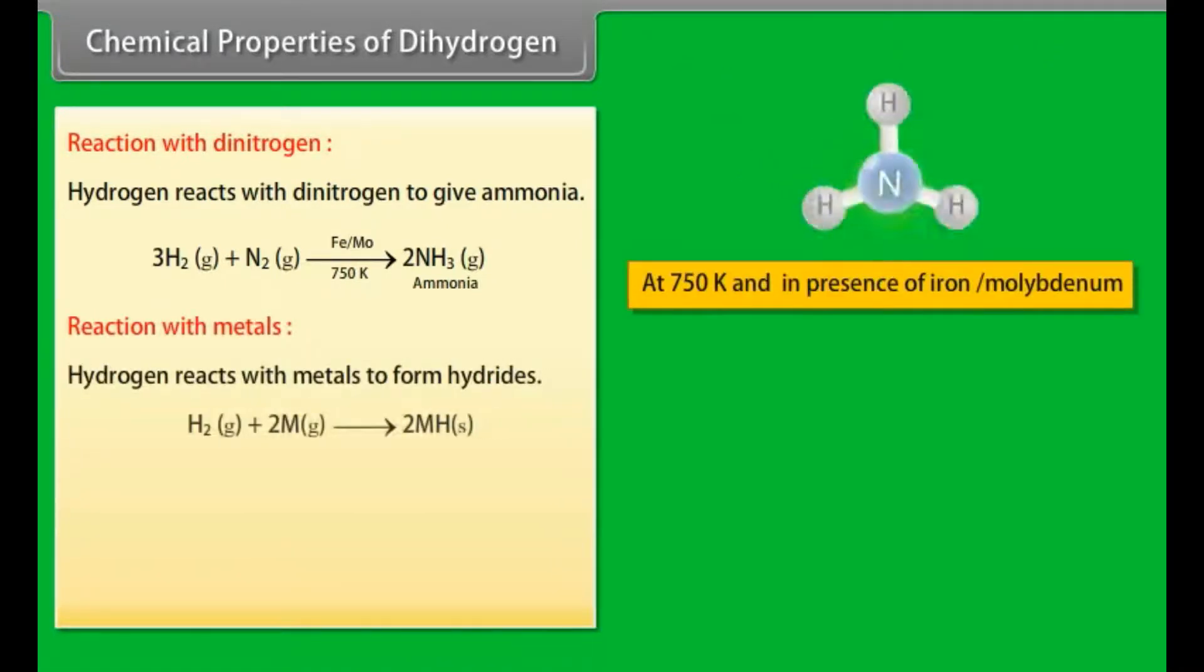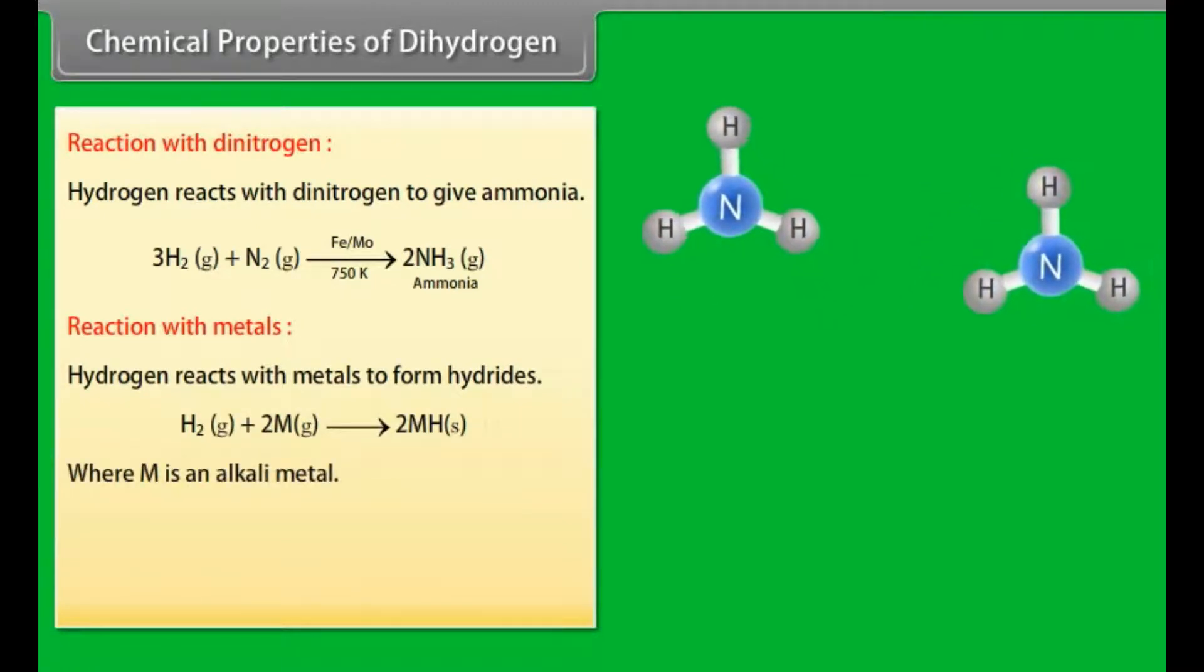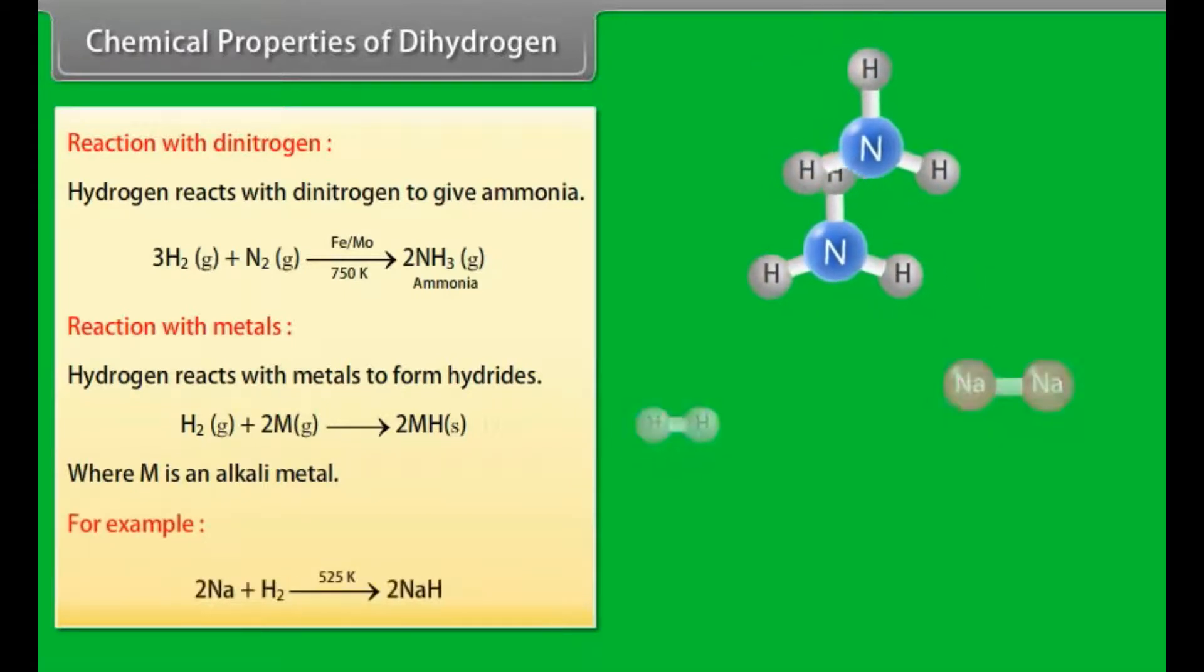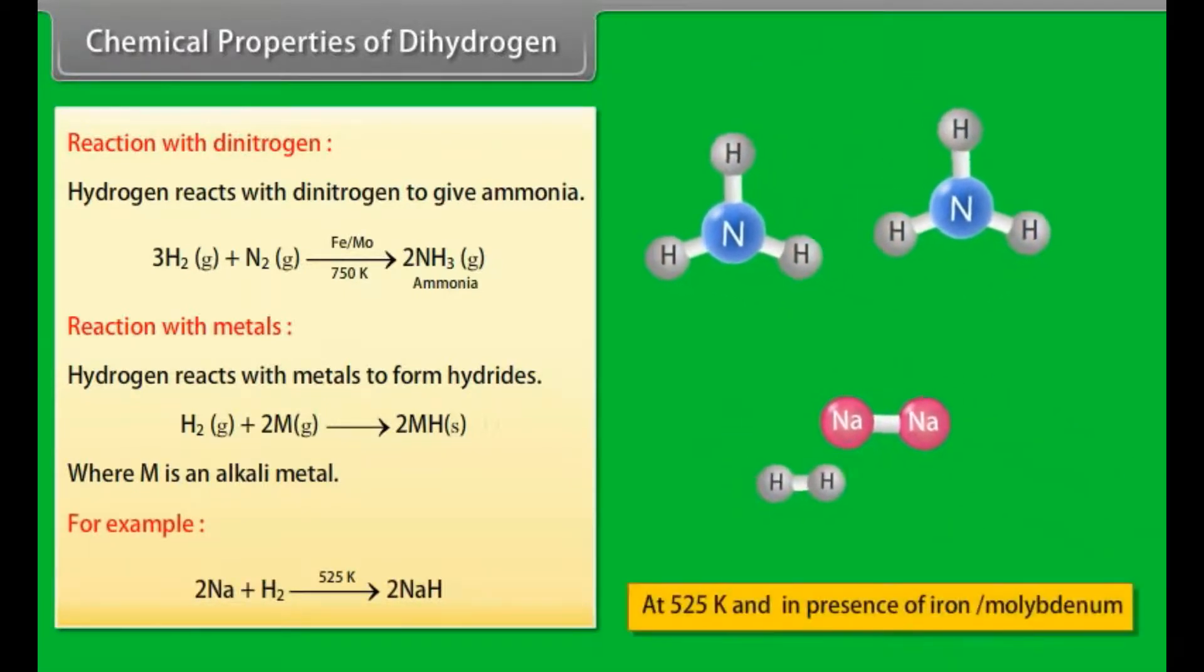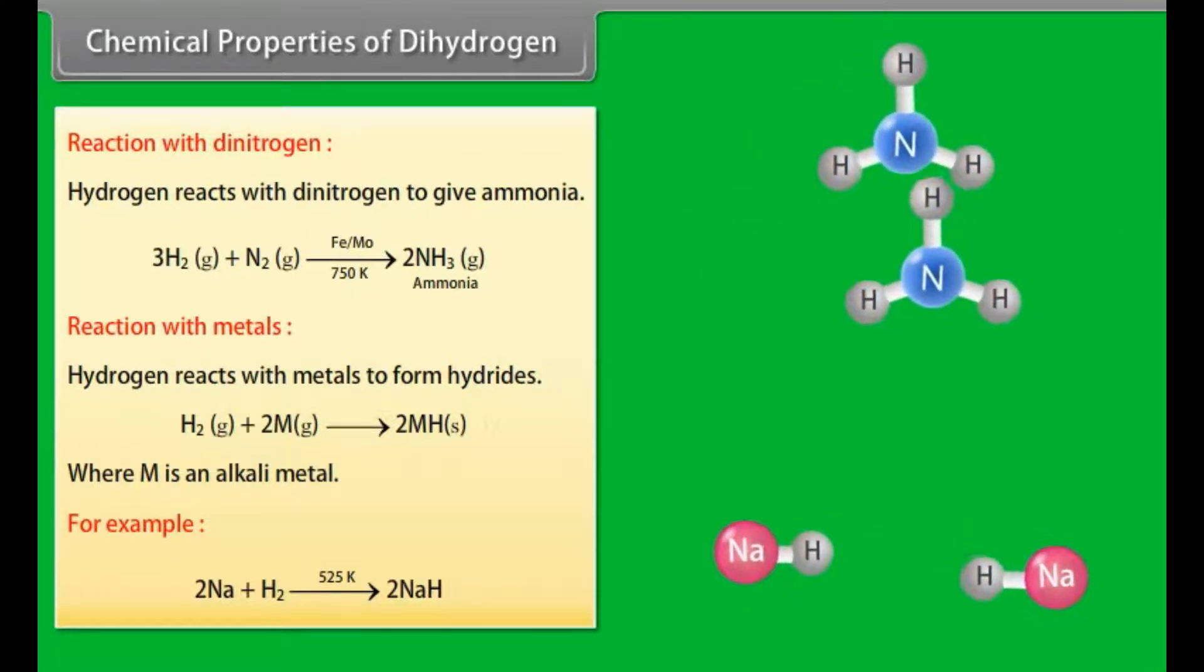Chemical properties of dihydrogen. Reaction with dinitrogen: Hydrogen reacts with dinitrogen to give ammonia. Reaction with metals: Hydrogen reacts with metals to form hydrides, where M is an alkali metal. For example, 2Na plus H2 on temperature 525 Kelvin gives 2NaH.